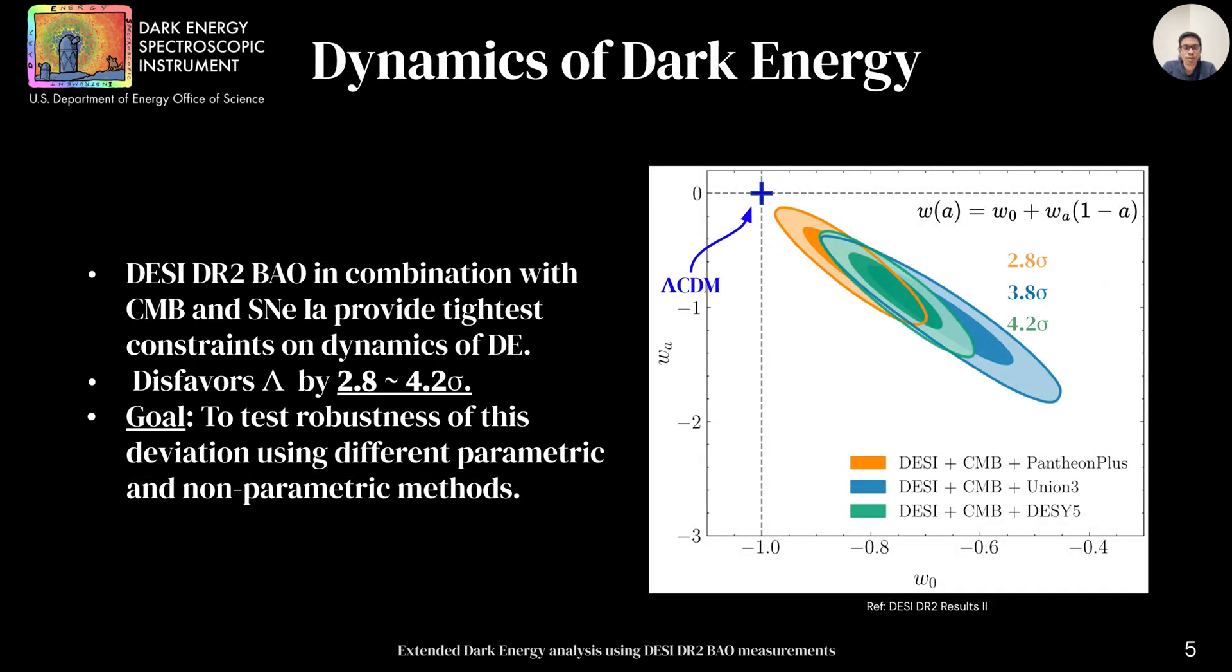DAISI data, when combined with CMB and supernovae, provide the tightest constraints on the dynamics of dark energy. Depending upon the supernovae combination we use, we see a deviation away from lambda CDM that varies from 2.8 to 4.2 sigma. The goal of this work is to test the robustness of this deviation using different parametric and non-parametric methods.